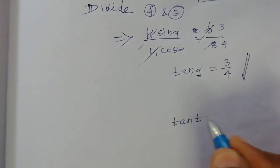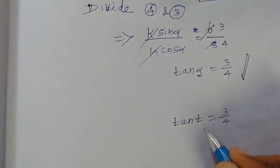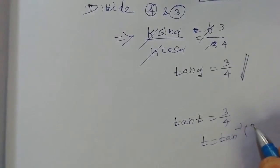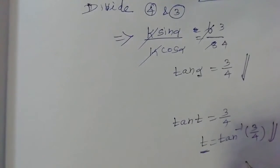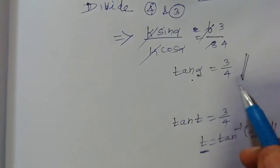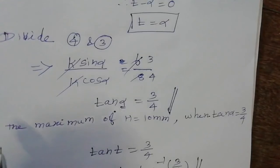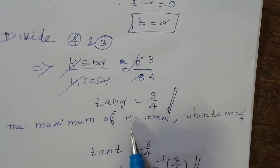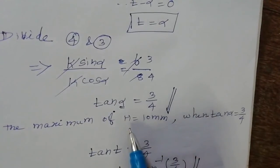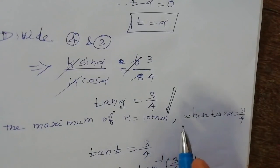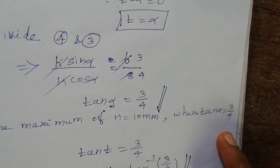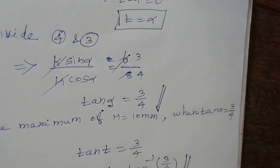Then t equal to alpha, so t equals tan inverse 3 by 4. Therefore the maximum height equal to 10 millimeters when tan alpha equal to 3 by 4. That height 10 millimeters, t value tan inverse of 3 by 4. This is the answer.